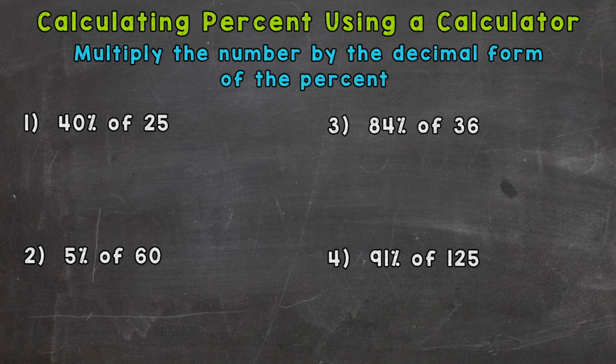So for example, number one: how to calculate 40% of 25. We do this by multiplying the number by the decimal form of the percent. For number one, 40%, we need to get to decimal form. In order to do that, we need to divide the percent by 100 or move the decimal twice to the left.